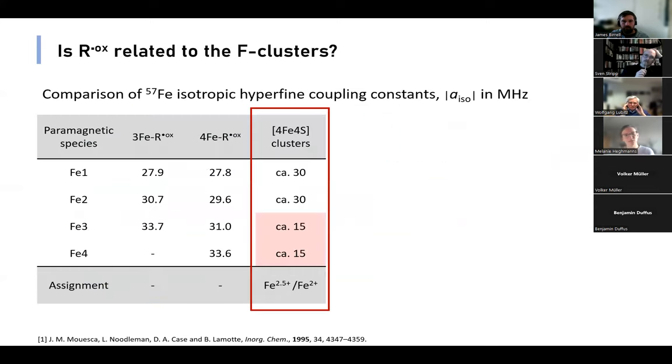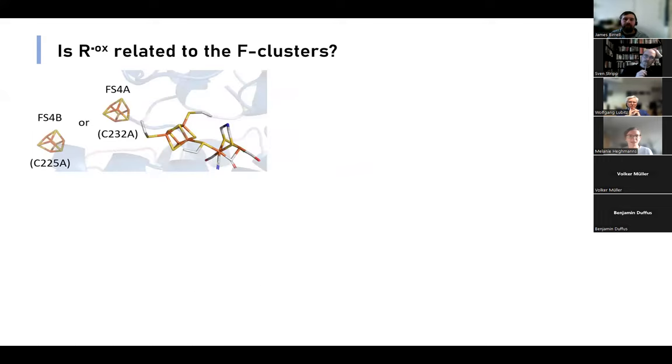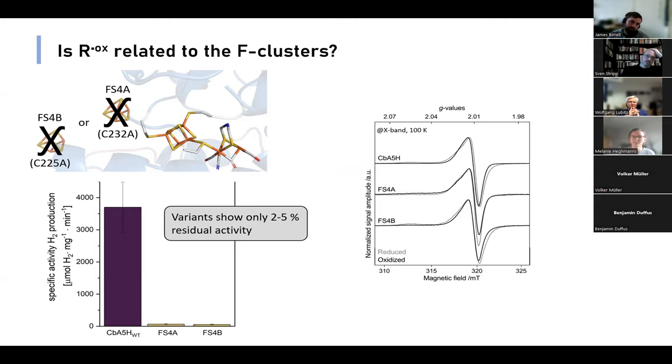Next we compared our hyperfine coupling constant from the simulation with a single isolated 4Fe-4S cluster. You can see that they are quite distinct. But to be entirely sure, we performed knockout mutations of either FS4B or FS4A. The resulting activity shows that the variants have only two to five percent residual activity left.